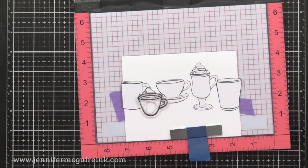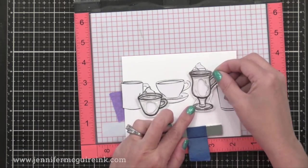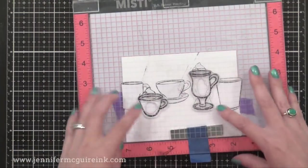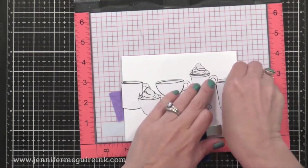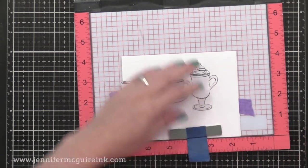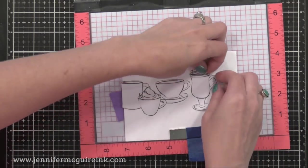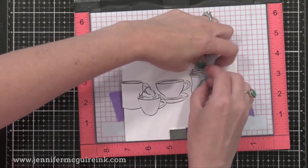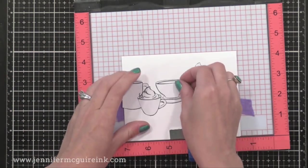Now I'm starting with the images that I want in the front most. So that's this little cup and this bigger cup. I line the stamps up with the masks. And then I can remove all of the masks from my paper. Except for the little whipped cream ones. I want whipped cream on the top of these cups. So I need to leave those masks in place.